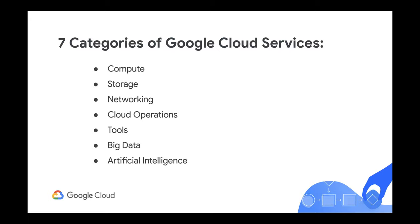There are seven categories of Google Cloud services. Number one is computing — different computing options let you decide how much control you want over operational details and your infrastructure. Next is storage — lots of data storage and database options for both structured and unstructured data. Third is networking — services that help balance application traffic and provision security for cloud operations, including a suite of monitoring and reliability tools. Fourth is tools — services that help developers manage deployment and application build pipelines.